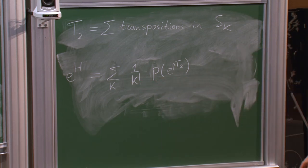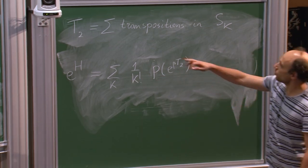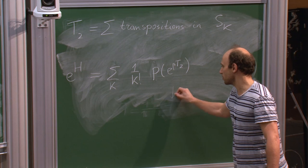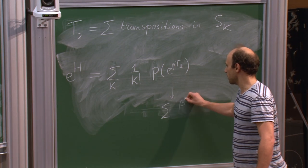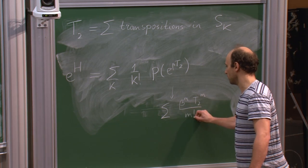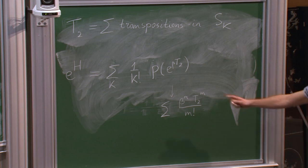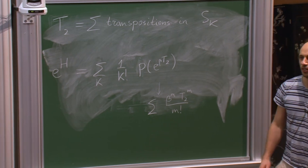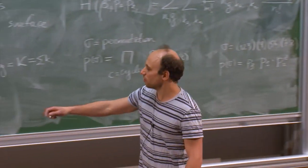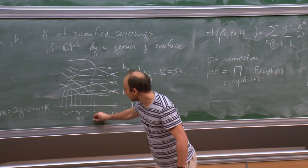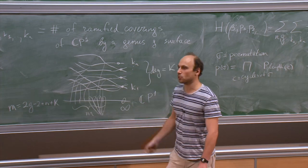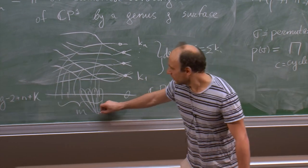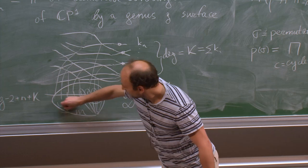Where does this come from? T₂ is the sum of all possible transpositions. If I raise T₂ to some power M, I consider all possible products of M transpositions. The product of M transpositions is the product of monodromies here — if I take the monodromies around these simple branch points, I get transpositions. Going around all of them one by one, I get a product of M transpositions, altogether giving the monodromy of a big cycle.